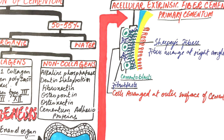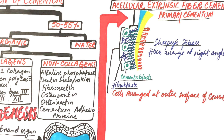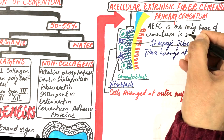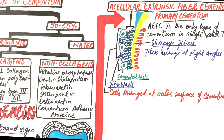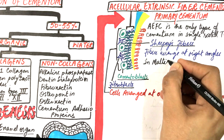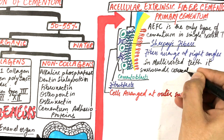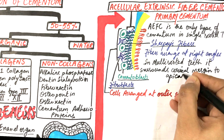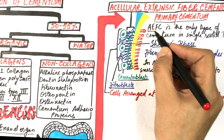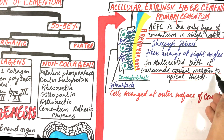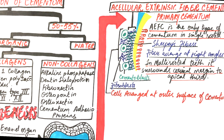The collagen fibers in acellular cementum are arranged perpendicular or at right angles to the tooth surface. Acellular extrinsic fiber cementum is the only type of cementum in single-rooted teeth, surrounding the root from the cervical margin to the apex. In multi-rooted teeth it surrounds the roots from the cervical margin up to the apical third. Its main function is strong anchorage of the tooth within its bony socket.